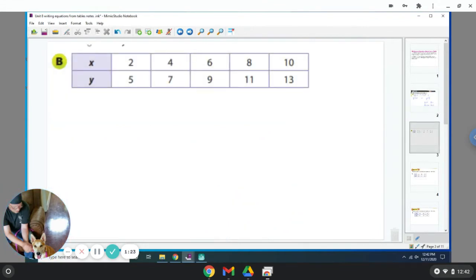Okay, so this one, when x is 2, y is 5. When x is 4, y is 7. 6, 9, 8, 11. So it looks like every time they're adding 3. So your equation would be y is equal to x plus 3.